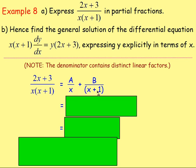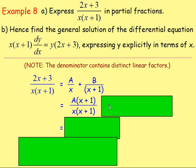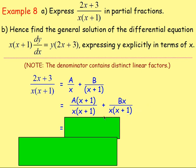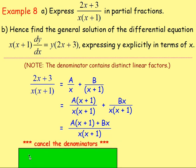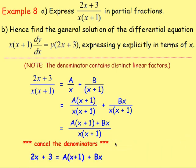To add the fractions, we need the same denominator. a is over x, but we need it over x(x plus 1), so multiply the numerator and denominator by (x plus 1). b is over (x plus 1), but we need it over x(x plus 1), so we're missing the x — multiply the numerator and denominator by x. The denominator is now the same, so we can add the numerators, giving us a(x plus 1) plus bx, all over x(x plus 1).